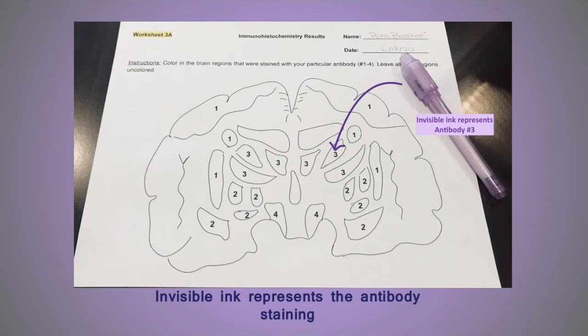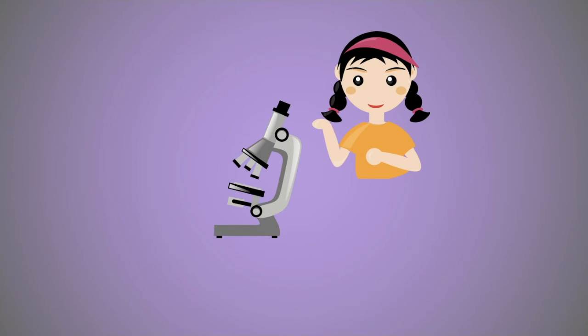Once they've shaded in all the regions corresponding to their number, they may then activate the invisible ink to reveal the results of their antibody staining.